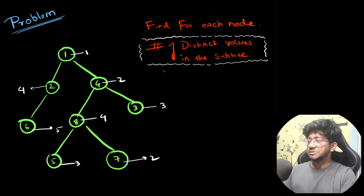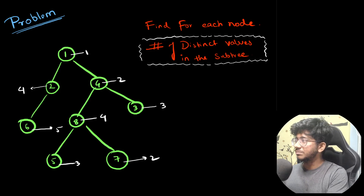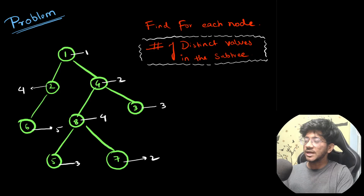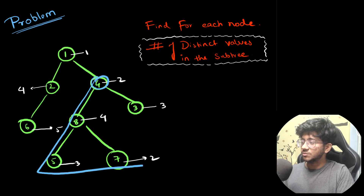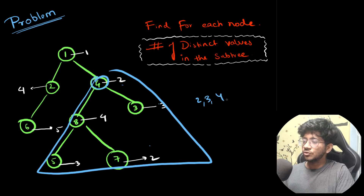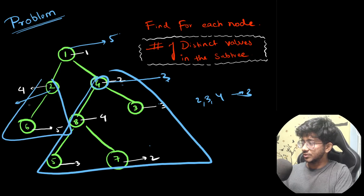So we're going to learn DSU on trees using a particular problem: for every node in the tree, we need to find the number of distinct values in the subtree of that node. Every node has a value — some color value. For a given node, if its subtree contains values 2, 3, 2, 4, then the distinct values are 2, 3, 4, giving an answer of three. For the root node with values 1 through 5, the answer would be five.